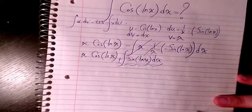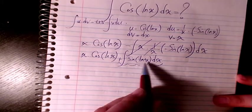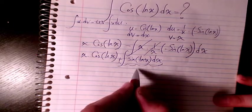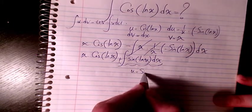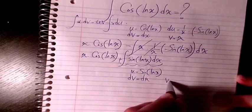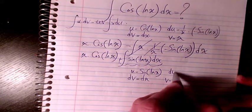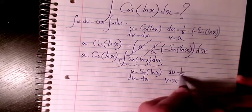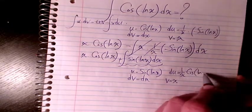Now I need to do another integration by parts to solve this part. So again, u will be sine of ln x, dv will be just dx, v will be x, du will be 1 over x cosine of ln x.